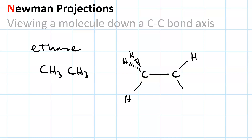Here is a three-dimensional bond line structure using wedges and dashes. This hydrogen is going up and to the left and towards you. This hydrogen is going up and to the left and away from you. This hydrogen is going down and to the left and it's in the plane. The C-C bond is in the plane. This hydrogen is going up and to the right and is in the plane. This one is down and to the right and away from you. And this one is down and to the right and towards you.